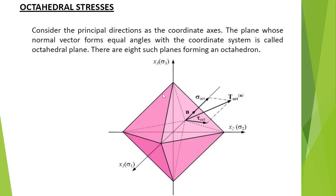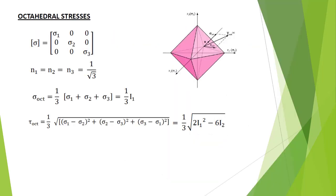Moving on to the second topic: octahedral stresses. Here the principal directions are taken as the coordinate axes. Octahedral planes are those planes whose normal vector forms equal angles with the coordinate axes. Since the principal directions are the coordinate axes, and the normal vector makes equal angles with them, we get n1 equal to n2 equal to n3 equal to 1 by root 3.